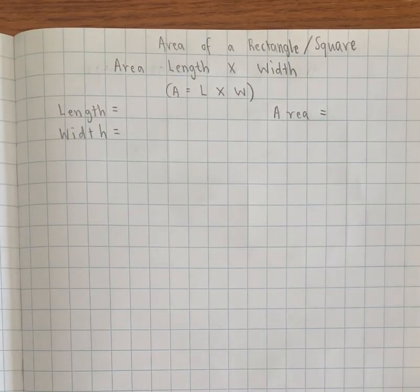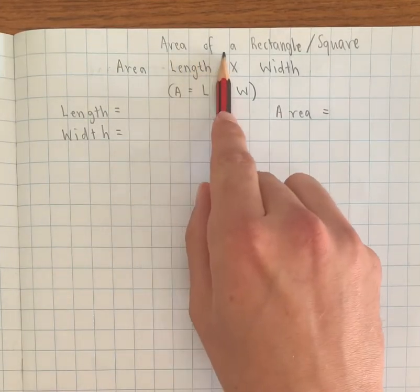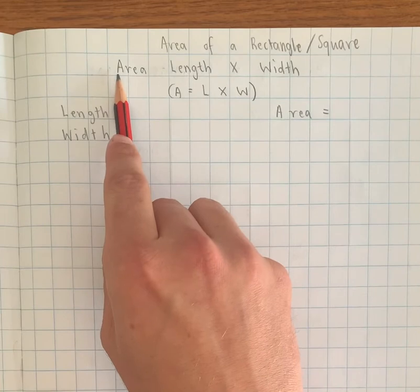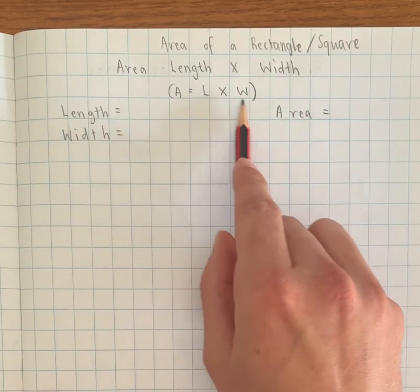Hi everyone, in today's video we're going to be looking at calculating the area of a rectangle or square using the formula: area equals length times width, or A equals L times W.